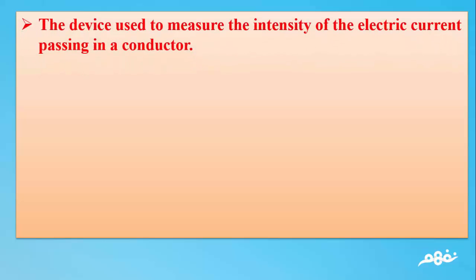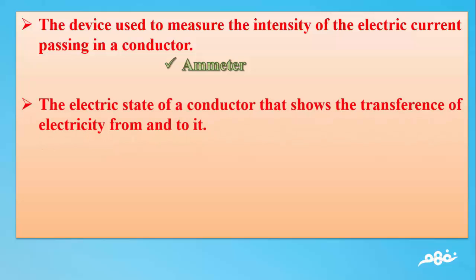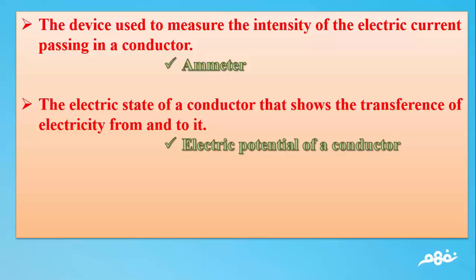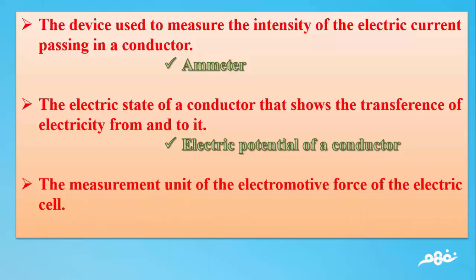Number 28: The device used to measure the intensity of the electric current passing in a conductor. The answer: Ammeter. Number 29: The electric state of a conductor that shows the transference of electricity from it. The answer: Electric potential of a conductor. Number 30: The measurement unit of the electromotive force of the electric cell. The answer: Volt.